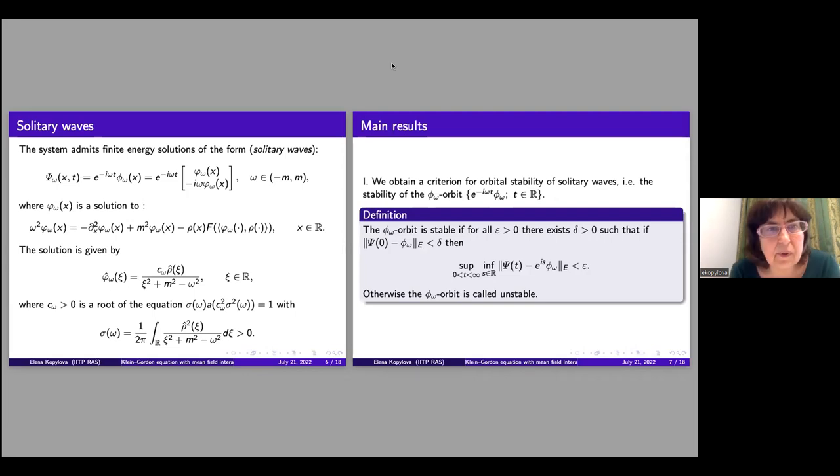The system admits soliton solution, Psi omega of this form. The frequency omega and the amplitude phi omega solve the following nonlinear eigenvalue problem. The solution can be found explicitly. Namely, the Fourier transform of Psi omega equal of this function.